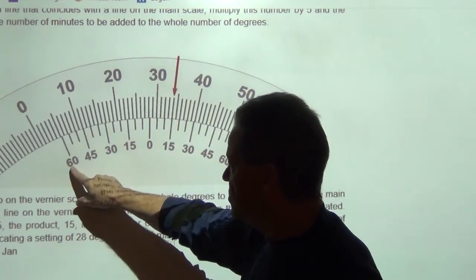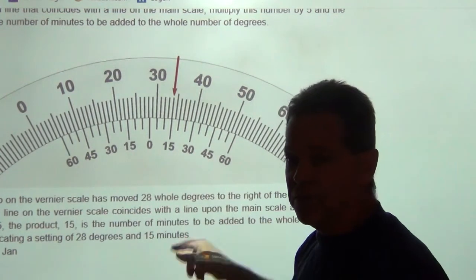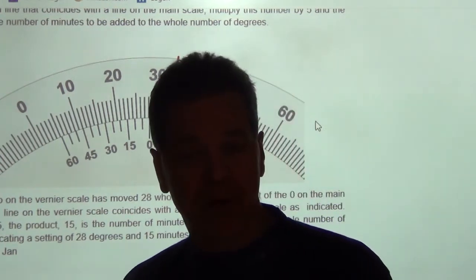And so, now notice here, these are 0 to 60 on the vernier scale. Well, if you think about degree measurements, if you take a 60th of a degree, that is called a minute.